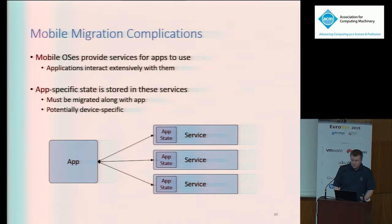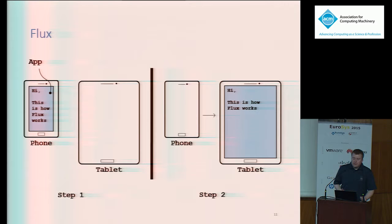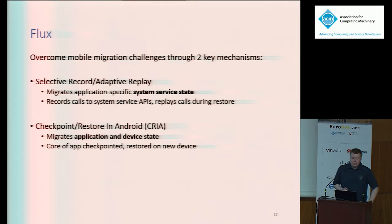To overcome these challenges, we created Flux. Flux allows for seamlessly moving an application from one device to another dissimilar device — for example, from a phone to a tablet, leveraging the larger screen. Flux leverages the existing design of Android to facilitate two key mechanisms enabling migration: selective record adaptive replay, and checkpoint restore in Android. Having noticed that Android's apps communicate with system services through well-defined framework-level APIs, we created selective record adaptive replay, which can migrate app-specific state residing within these services and accurately recreate it on a new device.